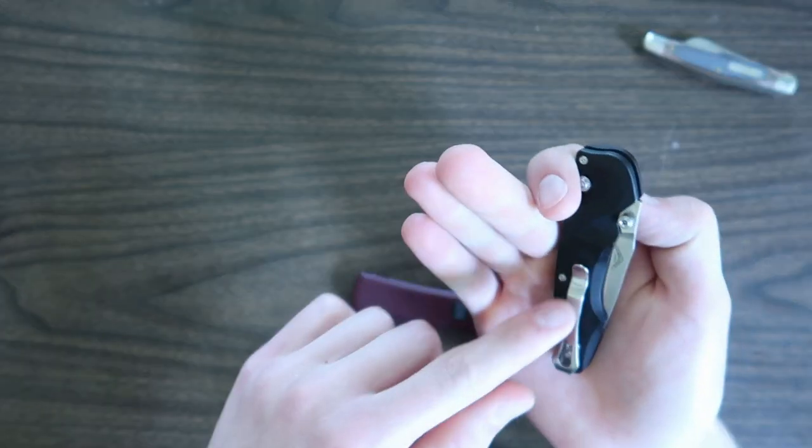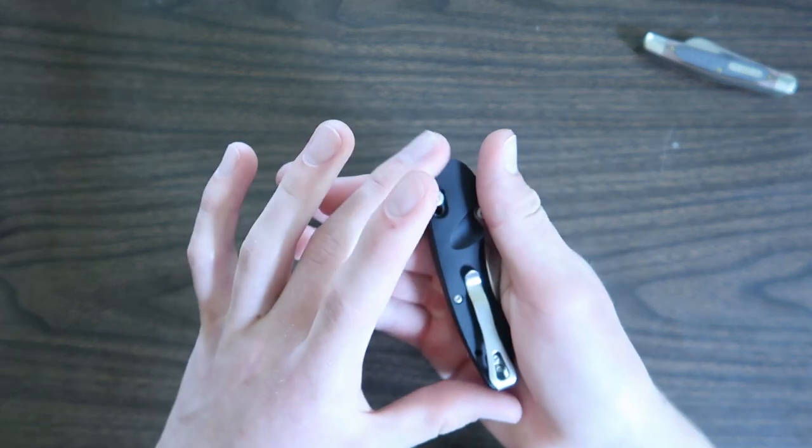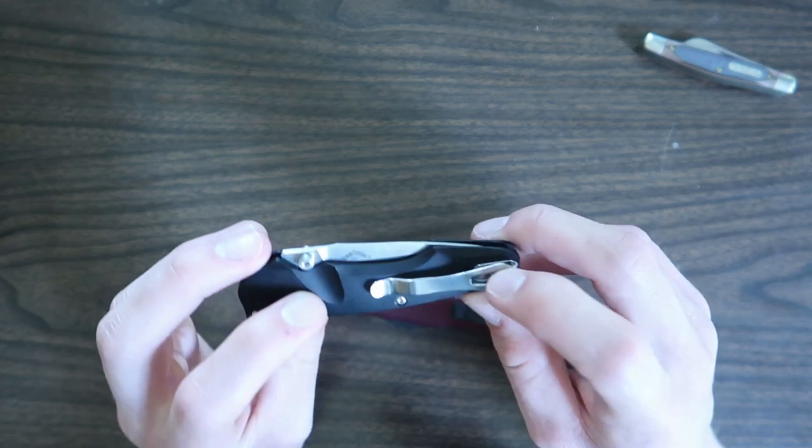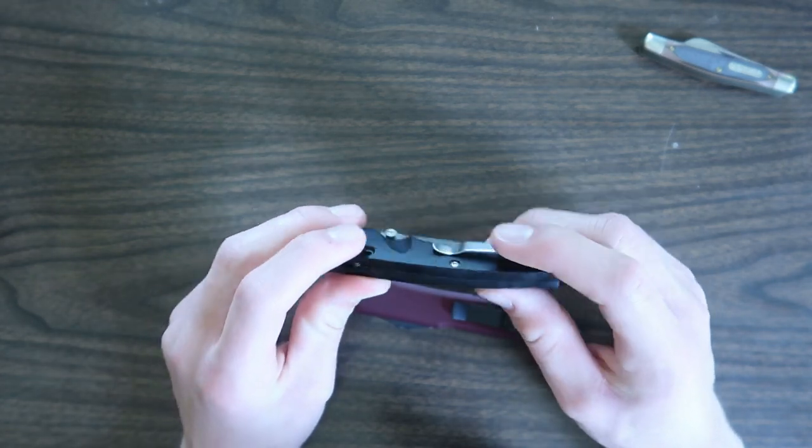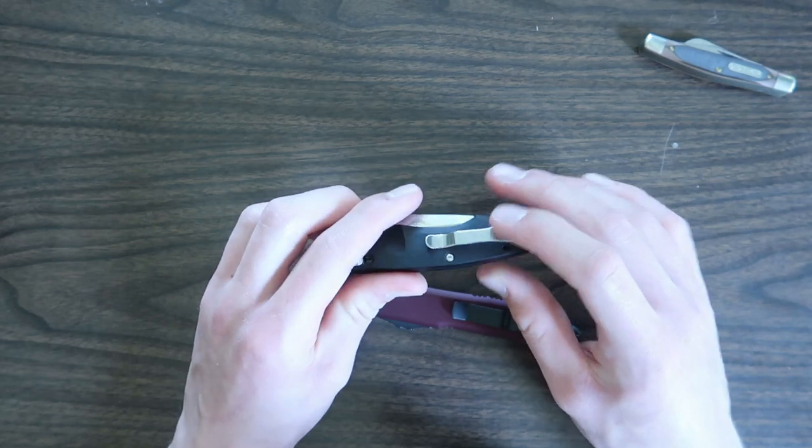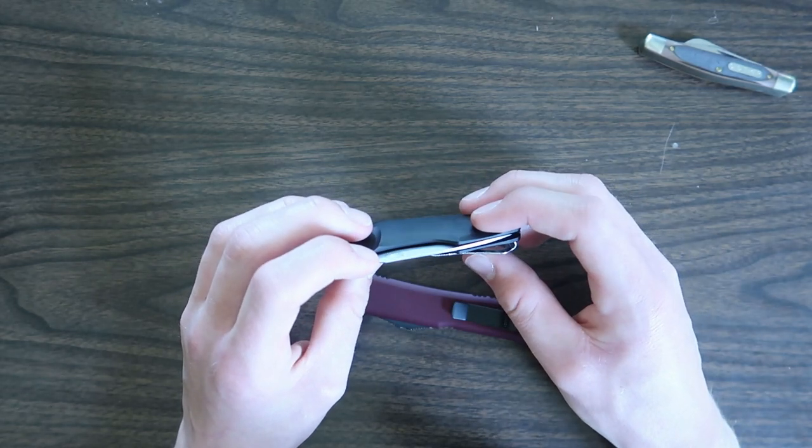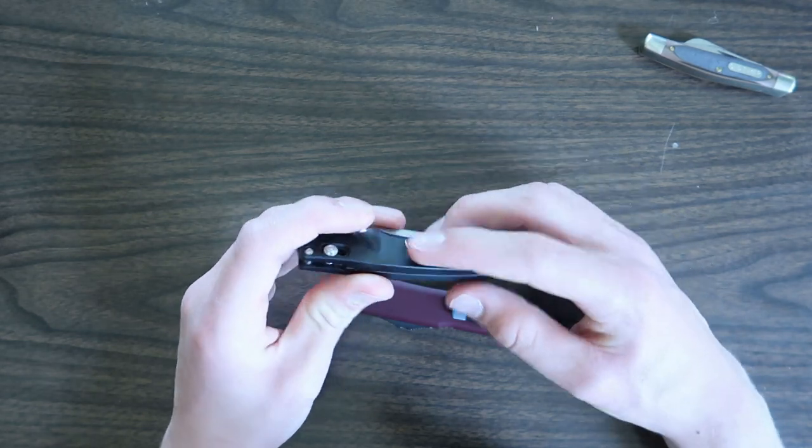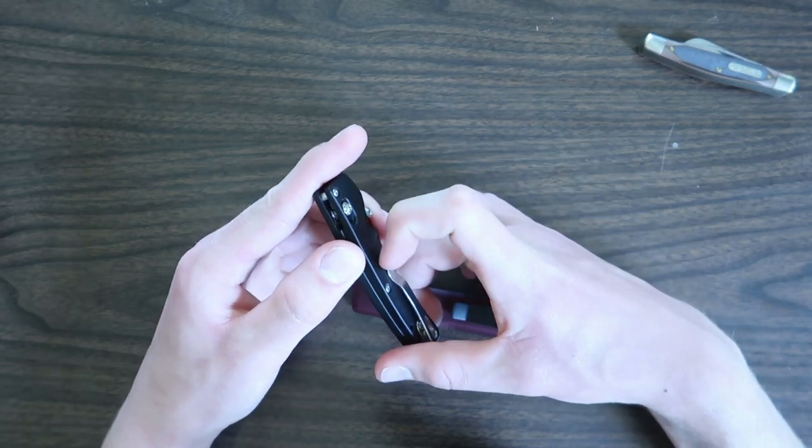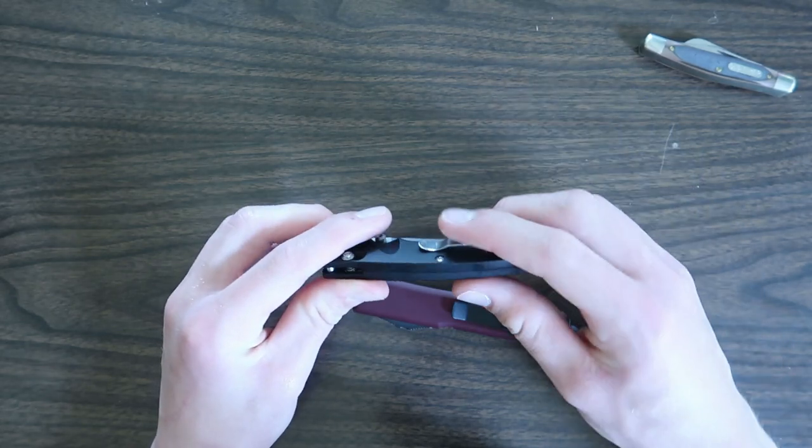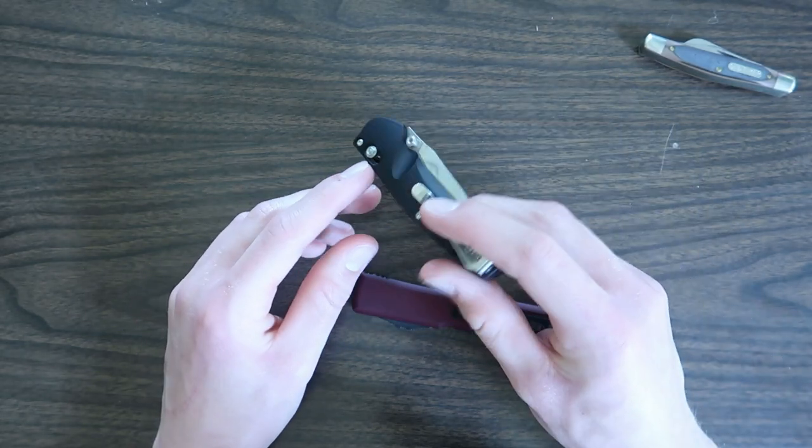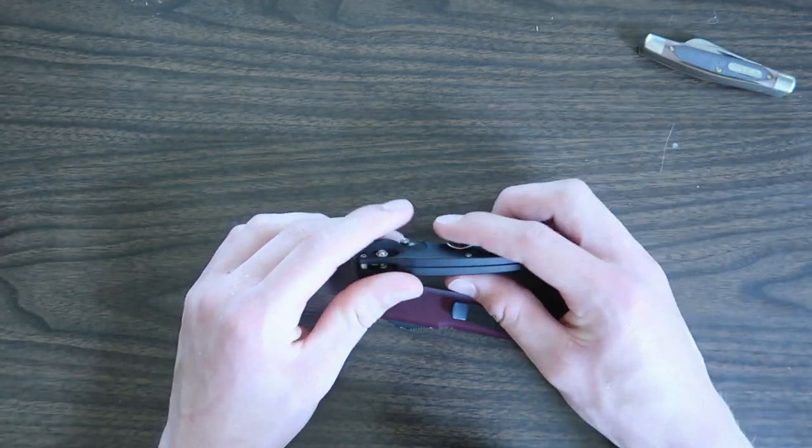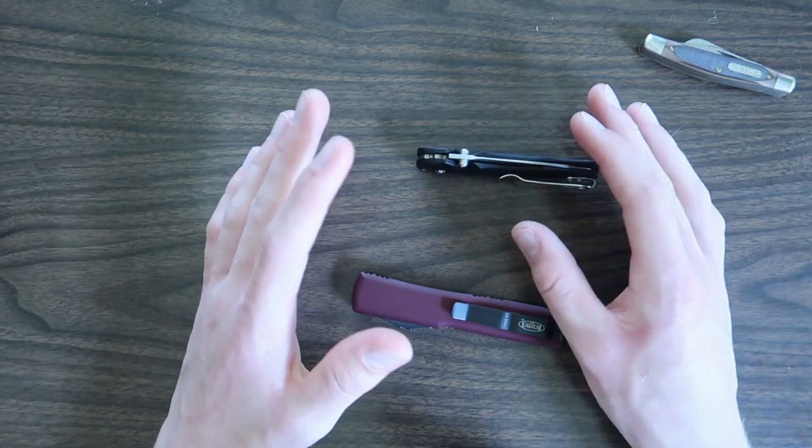On the Benchmade Emissary, it does have this pocket clip for clipping the knife to your pocket. If you notice, it's somewhat small and it does have bolts directly on the inside of it. Sometimes when you're clipping this knife into your pocket, these little bolts can get caught on some fabric and they kind of hang up when you're trying to pull it back out. And then the clip is also somewhat thin and it does not have the most resistance. Some people like the light resistance, being able to slide the knife into your pocket very easily. But that does come with a trade-off that the knife is very easy to fall out too.